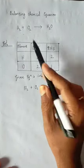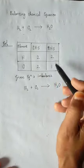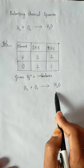So 2 hydrogens, 2 oxygens, 2 hydrogens, 1 oxygen. So it is imbalanced. Let's try to balance this.